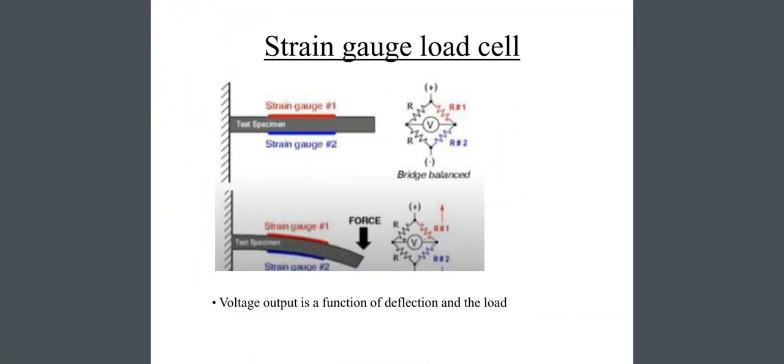Next, strain gauge load cell. Look at the figure. There are the test specimen, strain gauge 1 and strain gauge 2. And in the right, there is the bridge balanced. Voltage output is a function of deflection and the load.